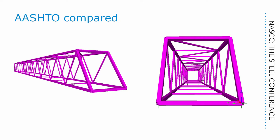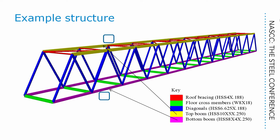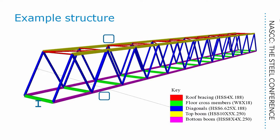We've taken that truss footbridge, based on a real structure, modified it a little to use a few different section types, and crunched the numbers. It's a span of 114 feet, 12 bays each of 12 foot length. The trusses are 11 foot deep and set 10 foot apart. The top and bottom booms are rectangular hollow steel sections, treated as continuous. The floor beams are I sections, W8 by 18, treated as pin-ended. All truss diagonals and roof members are round hollow steel sections, also treated as pin-ended. Steel grade is ASTM A500 grade C for all hollow sections, and AASHTO M270 grade 50 for the W beams.